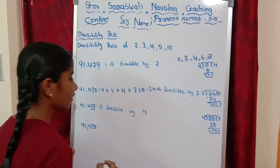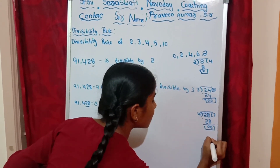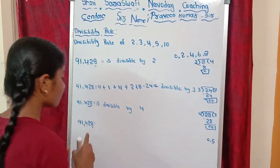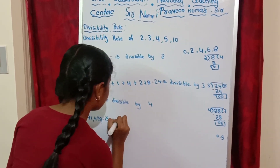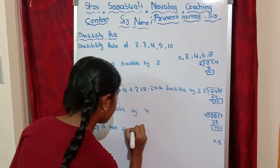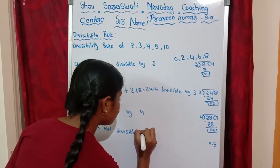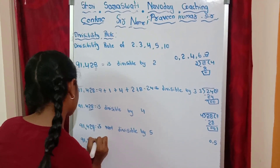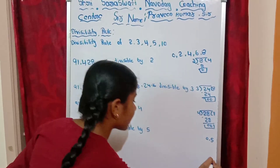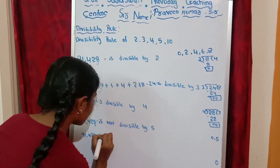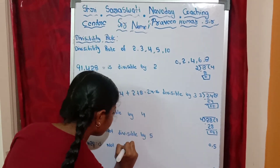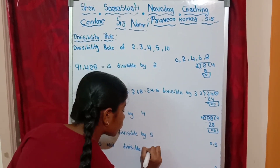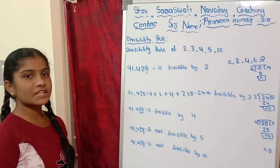For divisibility by 5, the unit place must be 0 or 5. In 91,428, the unit place is 8, so it is not divisible by 5. For divisibility by 10, the unit place must be 0. Since the unit place is 8, it is not divisible by 10. Please like and share the video and subscribe to the channel. Thank you.